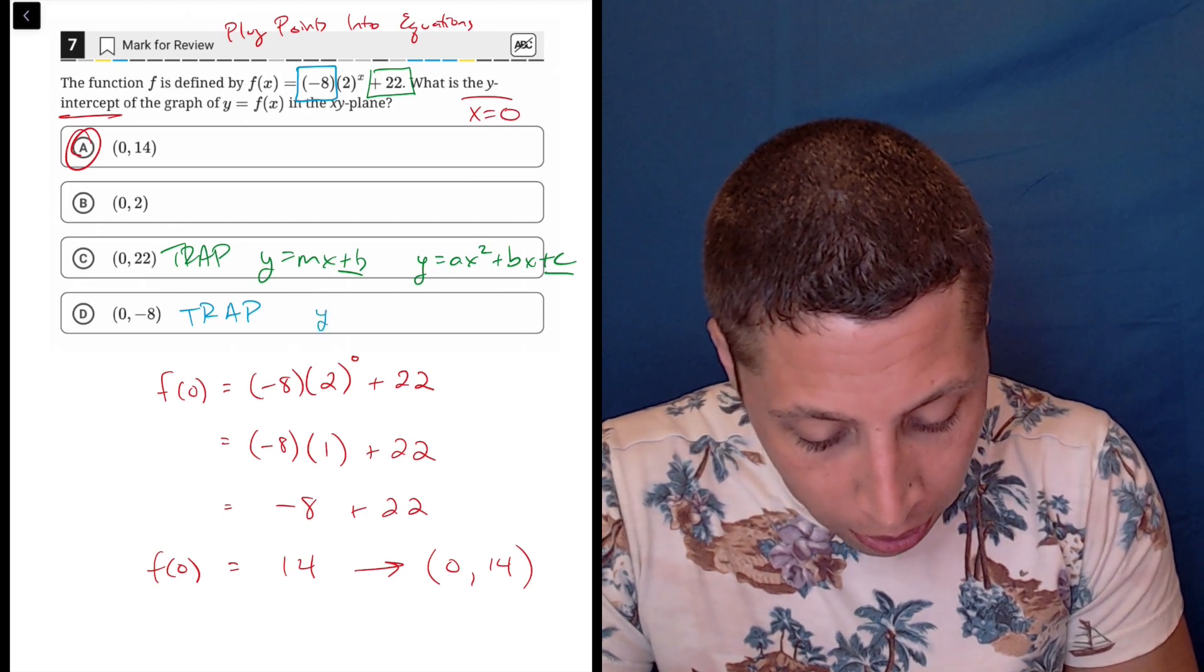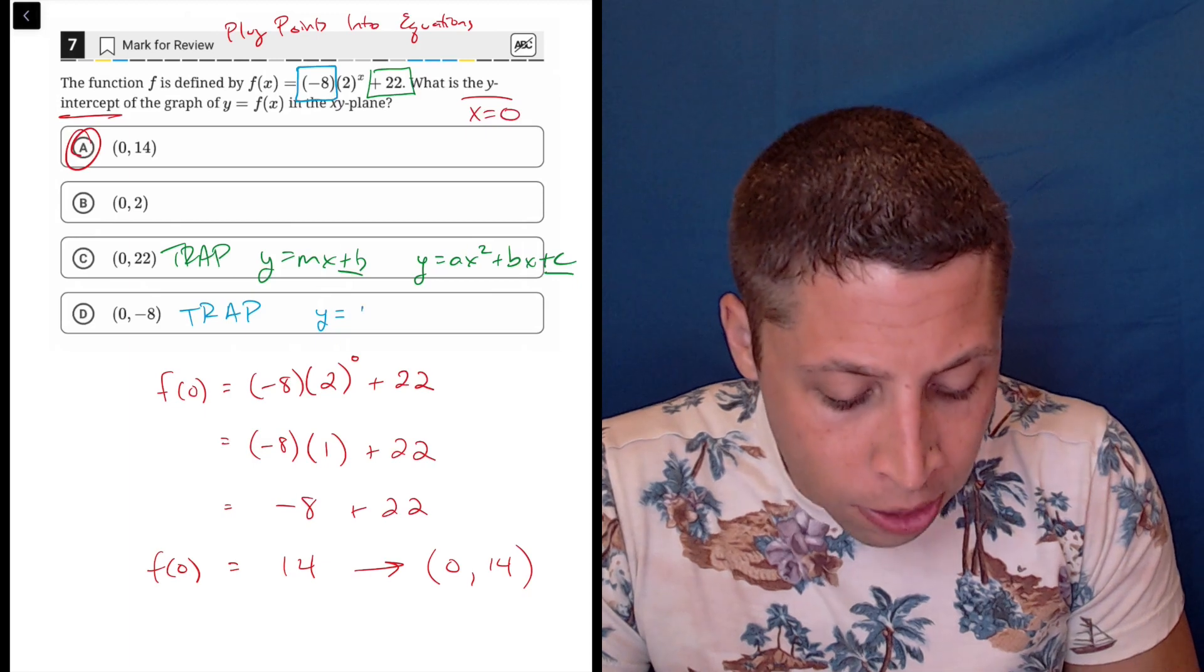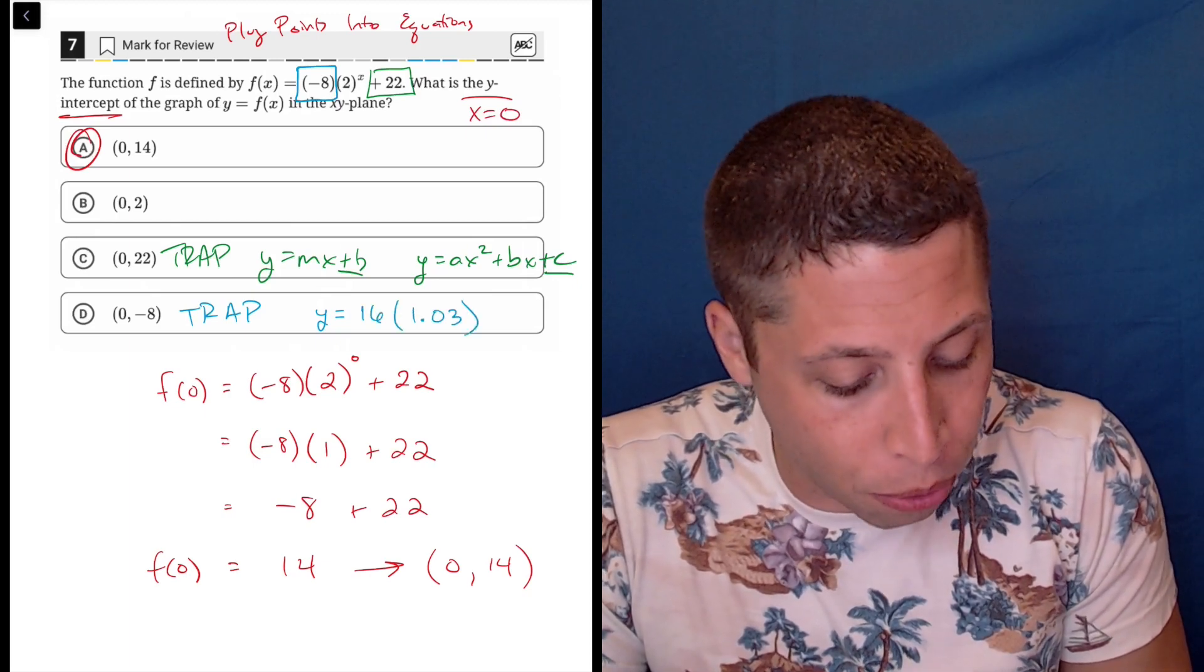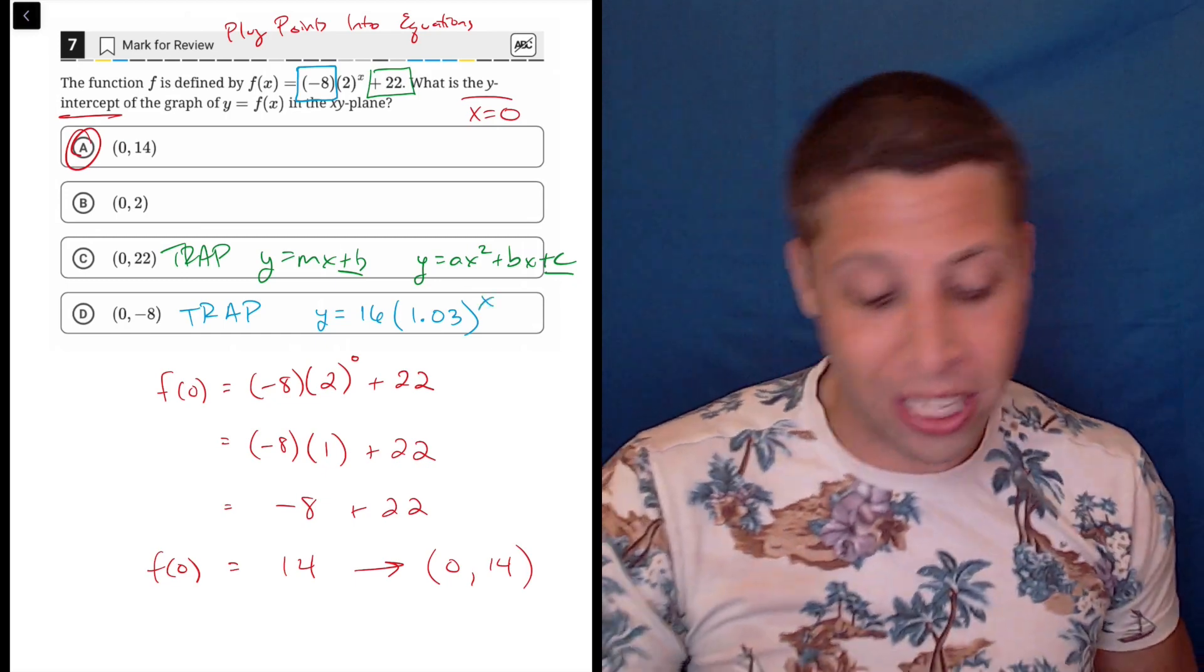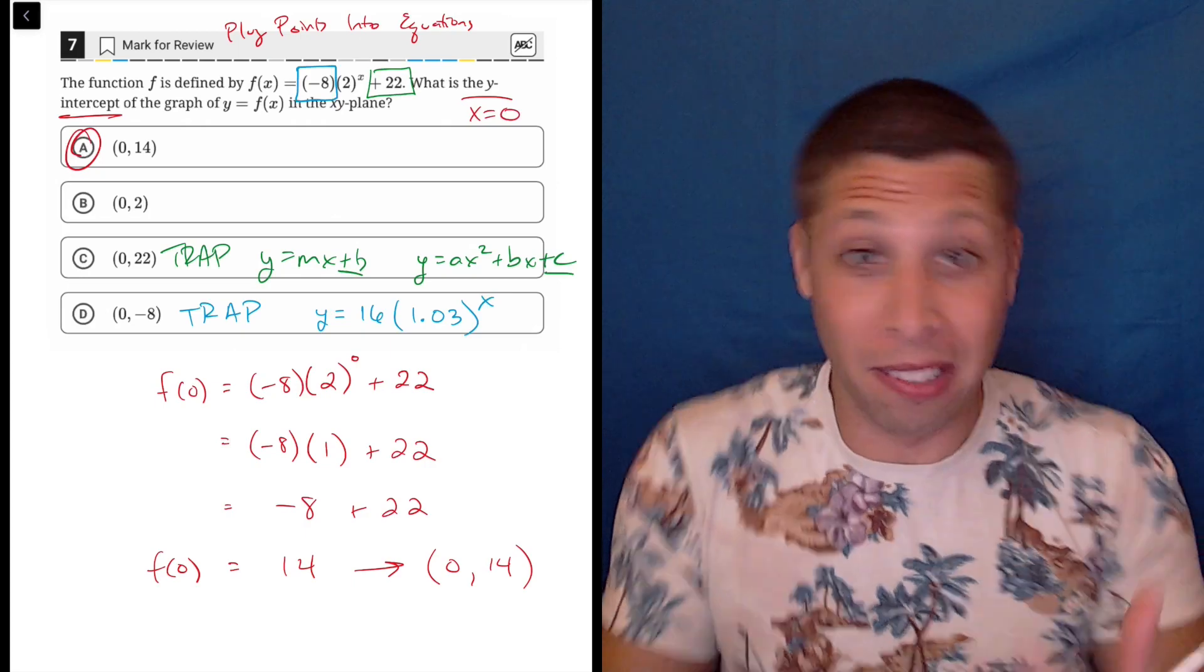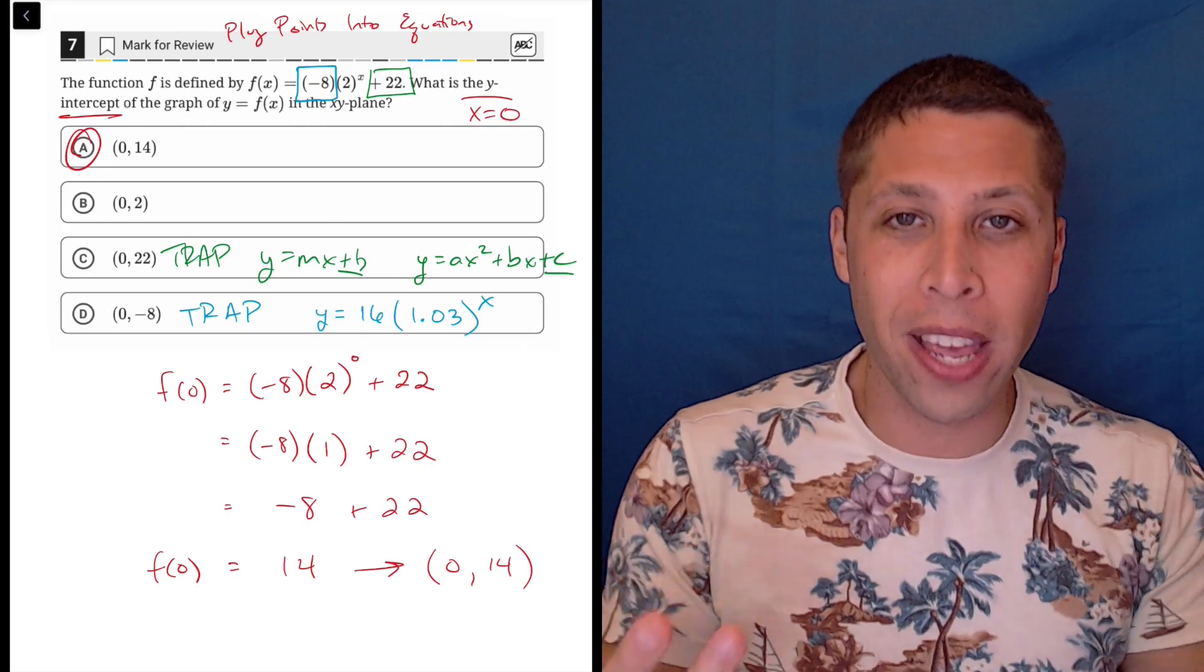Like something like 16 times 1.03 to the X or T, right? Where there's only really the exponential piece. But this question did something weird - it added on the 22. So there's two things going on at once.